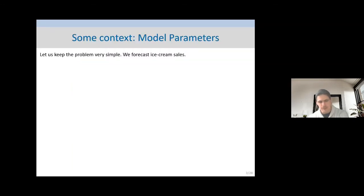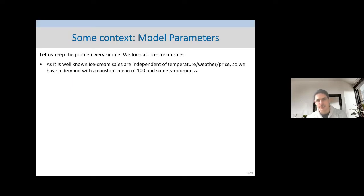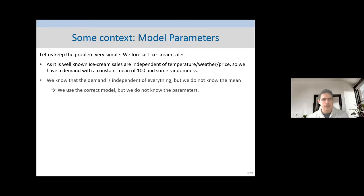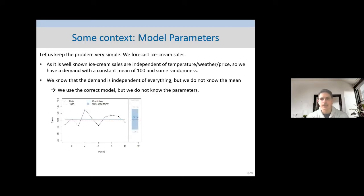Let me start with a very simple problem. Suppose I want to forecast a particular product — ice creams. As everybody knows, ice creams are independent of temperature, price, or everything, because we just like ice creams. So let's suppose we have a constant demand of about a hundred units per period with some randomness on top. If we know that demand is independent of everything, we really just have to estimate the mean demand from our data. We have the correct model but we don't know the parameters, and let's say we have 10 periods of past demand.